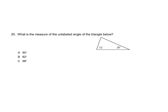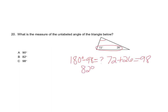Number 20: what is the measure of the unlabeled angle in the triangle? Interior angles of a triangle always add up to 180 degrees. First find the sum of the two known angles: 72 plus 26 equals 98. Then subtract from 180: 180 minus 98 equals 82 degrees, which is answer B. Be careful not to stop after adding — make sure you do all the work.